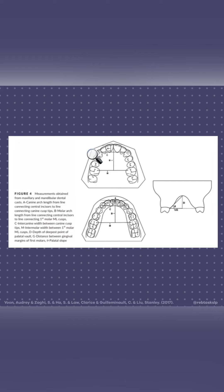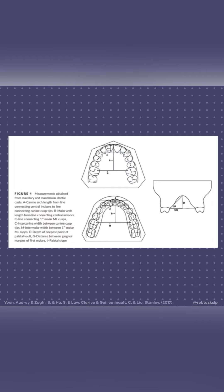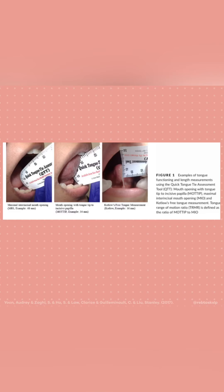They looked at different measurements in the mouth, including canine to canine arch length, the molar arch length, the intercanine width, the intermolar dental heights, the distance between the margins of the molars, and the slope of the mouth. In order to determine the severity of the tongue tie, researchers used the Kotlow Free Tongue Tie Measurement Score as measured by the Quick Tongue Tie Assessment Tool, as well as a ratio determining the opening of the mouth tip to the incisive papilla.